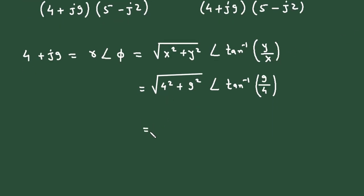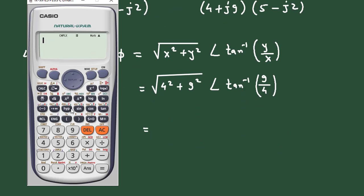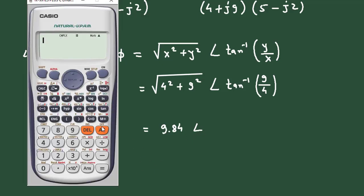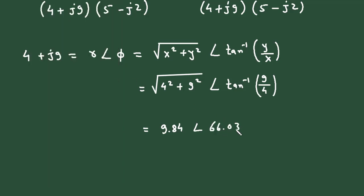Solving: √(4² + 9²) = 9.84, and tan⁻¹(9/4) = 66.03°. So 4 + j9 = 9.84∠66.03°.